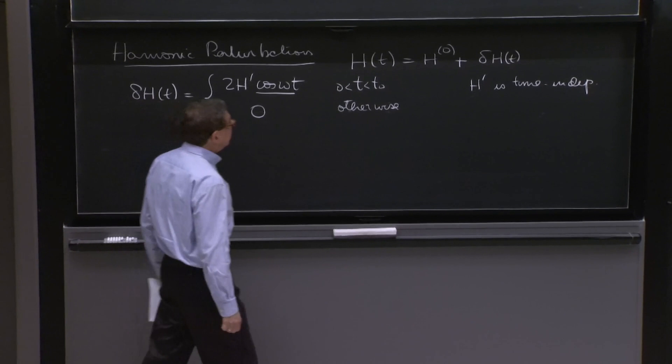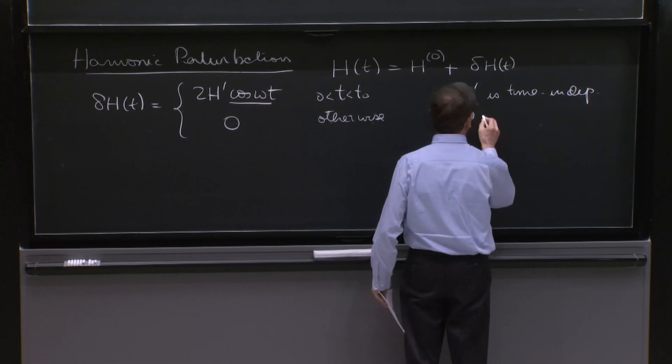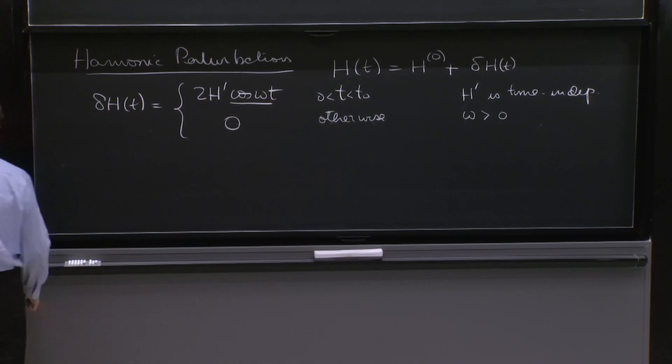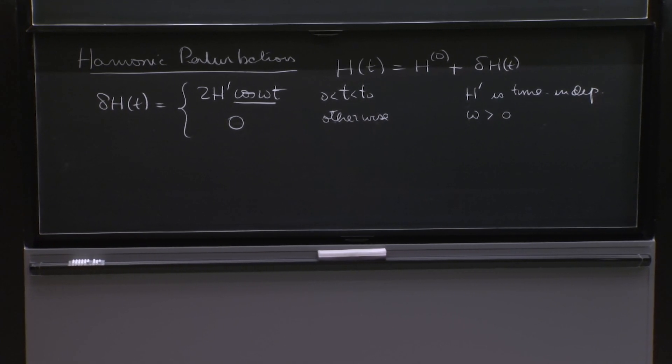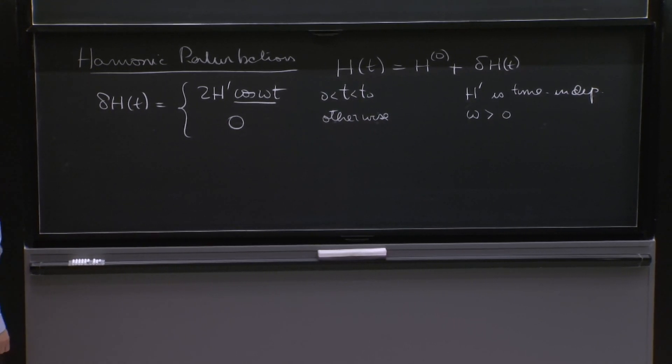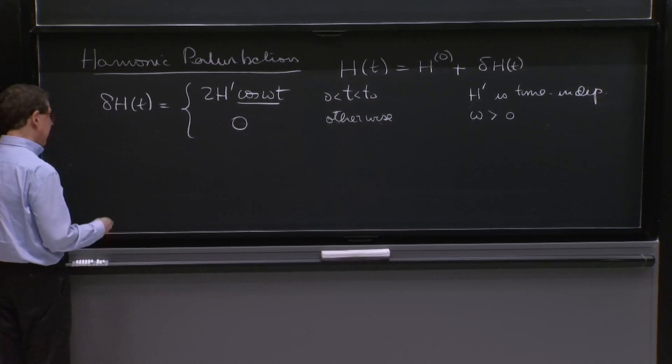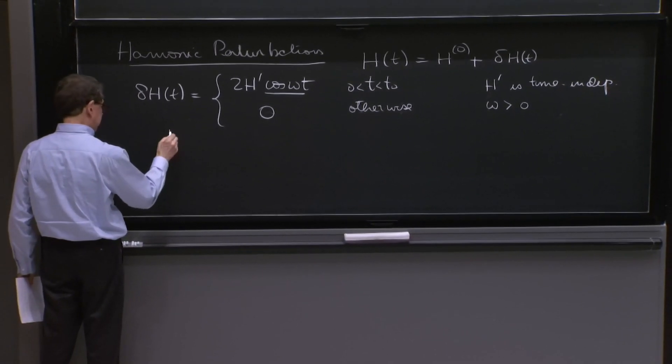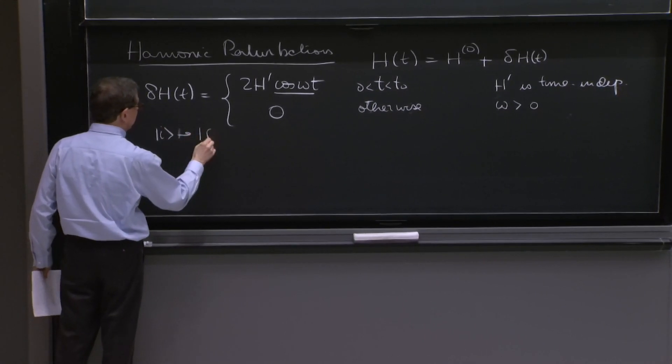Moreover, for reasons of convention, just let's always think of omega as positive. It wouldn't make a difference if it would be negative here with a cosine function. But let's just set by convention that omega is positive. Finally, we're going to do transitions, again, from an initial to a final state. So we will consider the case when we go from an initial state to a final state.